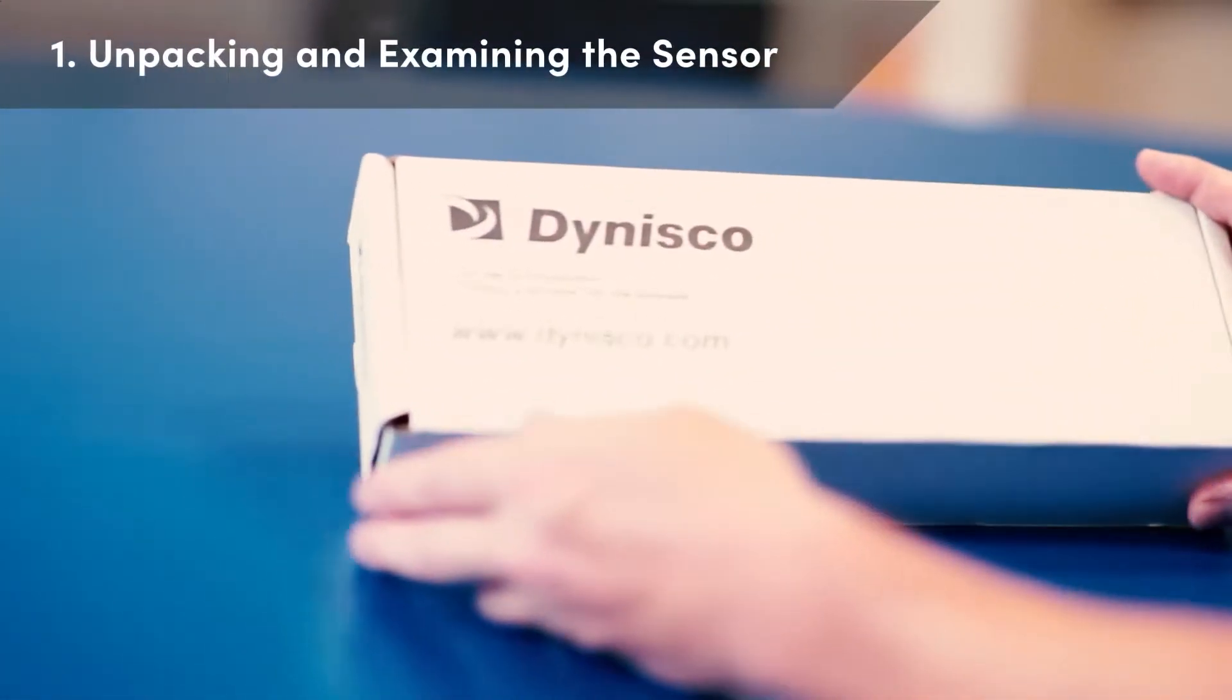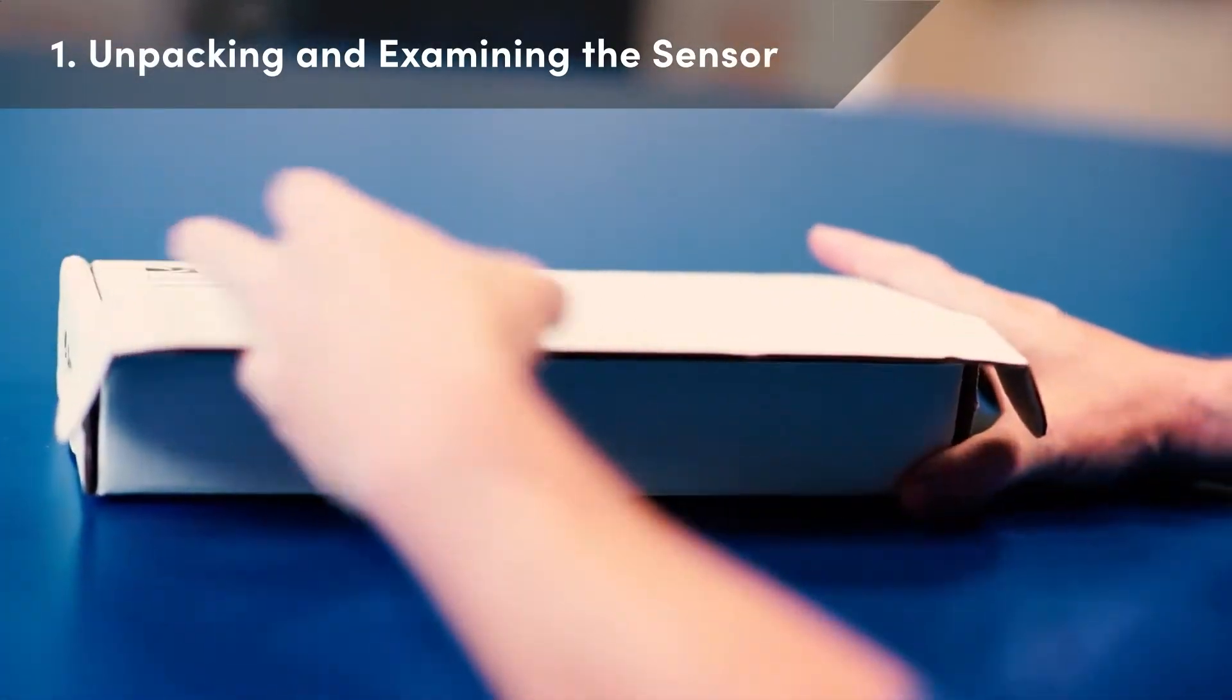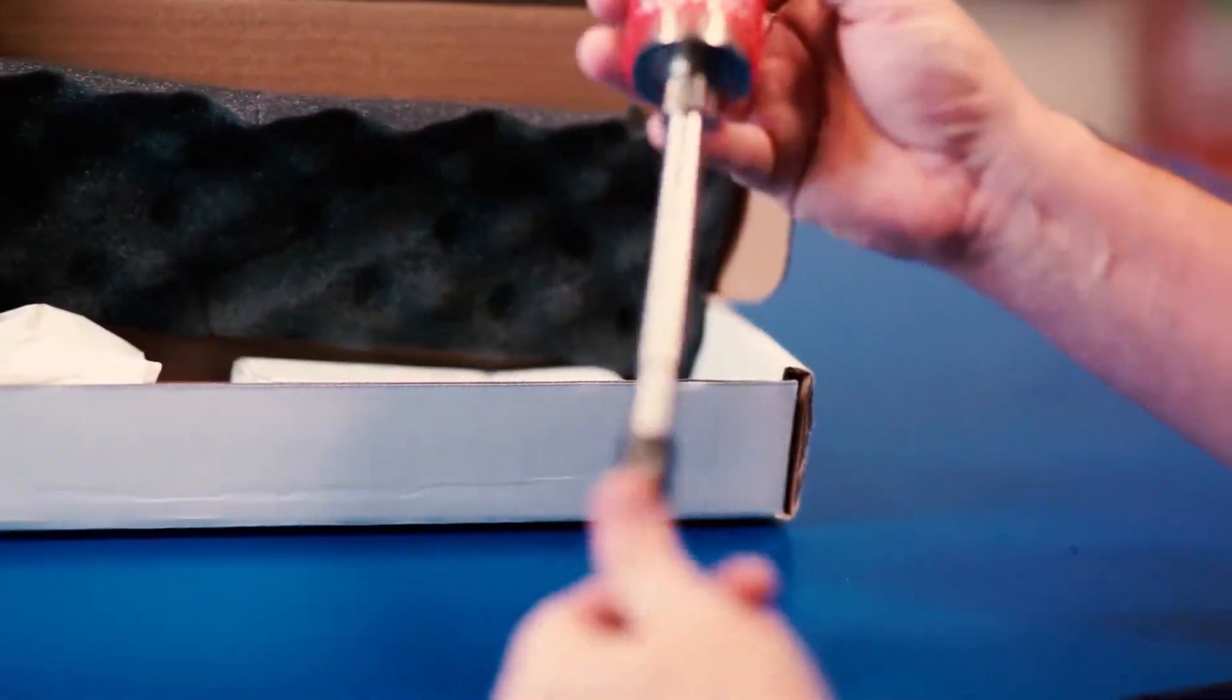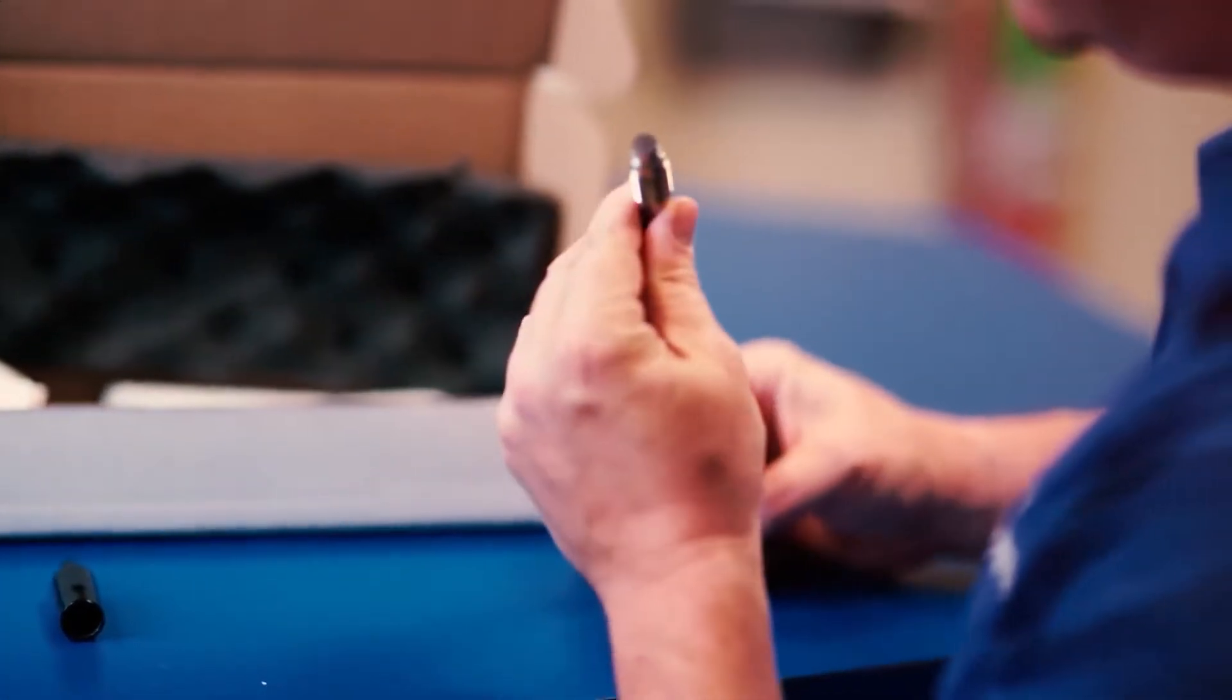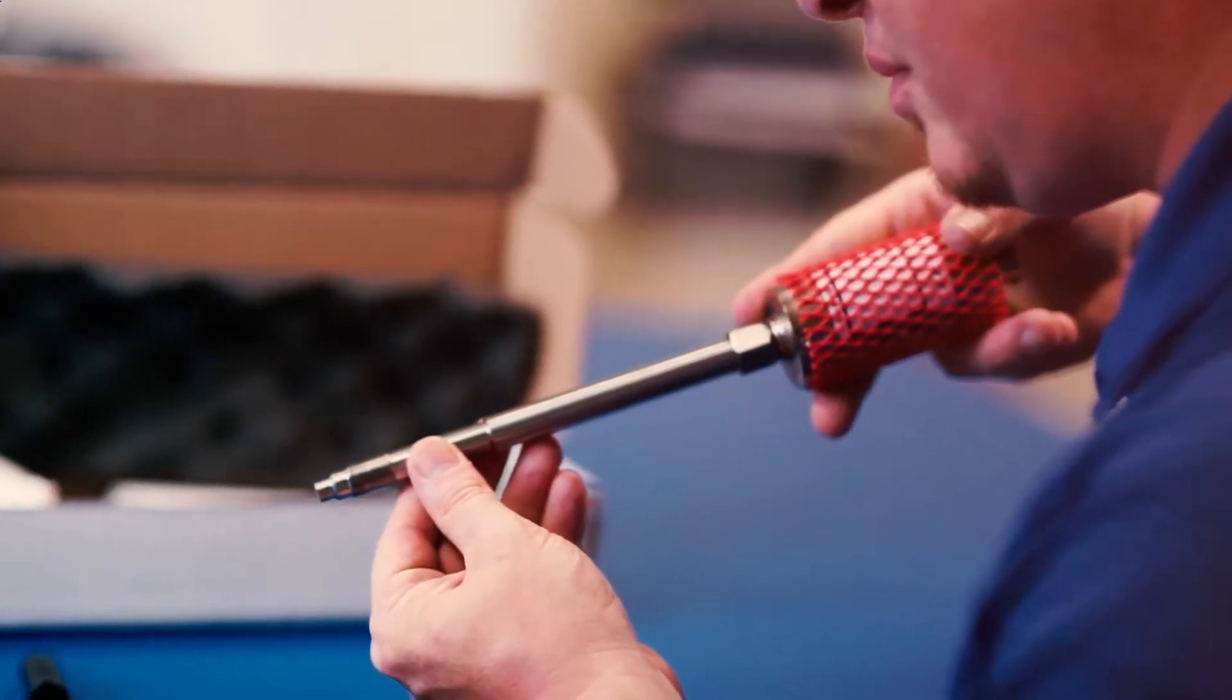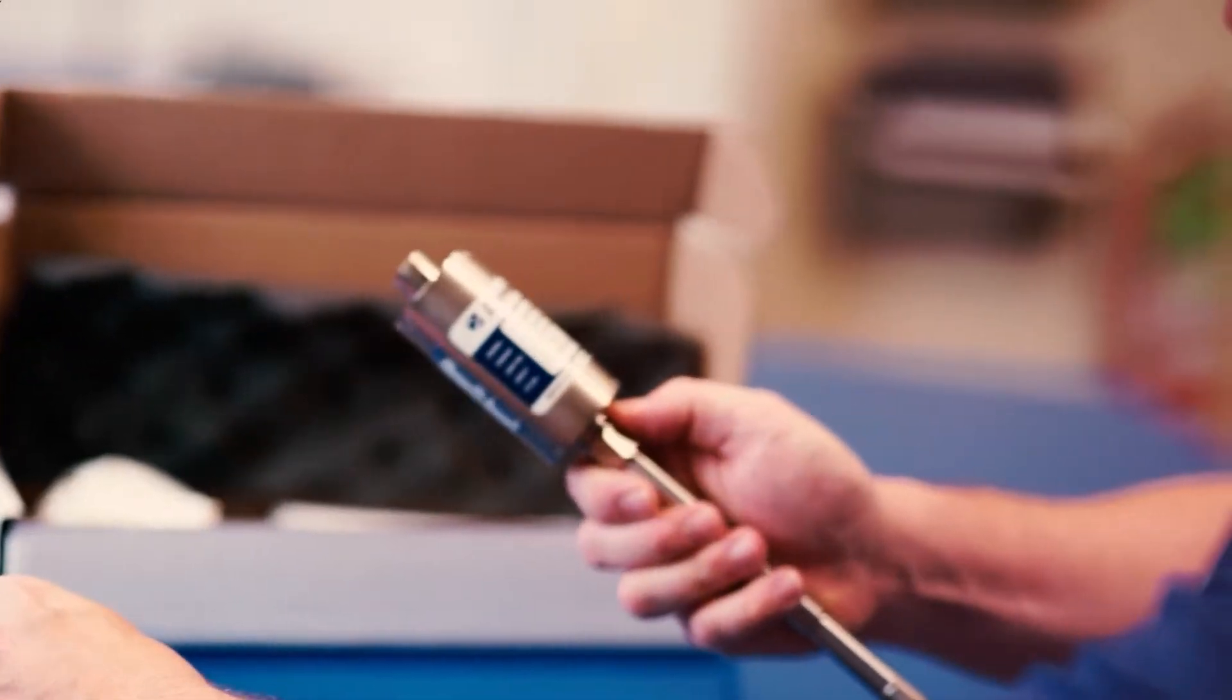First, the technician removes the sensor from the box and examines the process connection and diaphragm for damage. In the unlikely situation where damage is discovered, Dynisco recommends that the customer document the damage and return the sensor to Dynisco for evaluation. Note that all returns require authorization, so please contact your Dynisco Customer Service Department for further assistance.